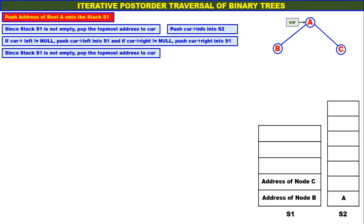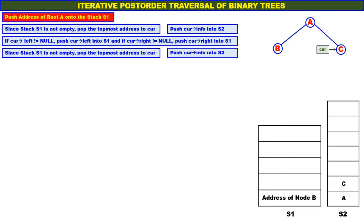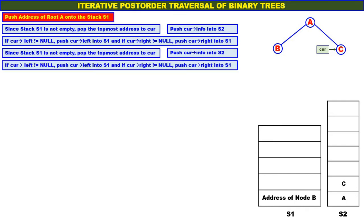Again check the stack. Since stack S1 is not empty, pop the topmost address to CUR. Topmost address is address of node C — pop it and assign it to CUR. Push CUR info into S2, so C is pushed onto stack S2. CUR left is not equal to null — C does not have a left child, it is null, so there is no push. CUR right is null, therefore there is no push.